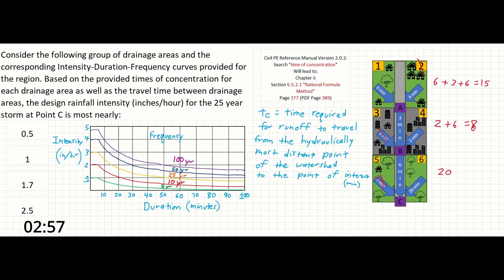If we take that number of 20 minutes and trace up on our intensity duration frequency plot to the line for the 25 year storm, and then trace over to the intensity that corresponds to it, we can see that our answer is about 1.7 inches per hour, or the third answer of our list.